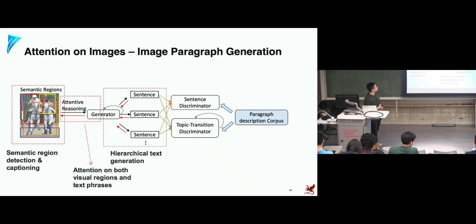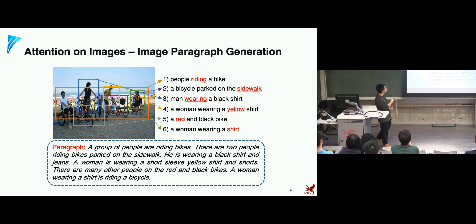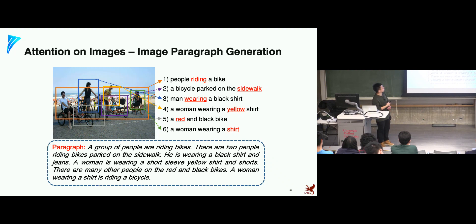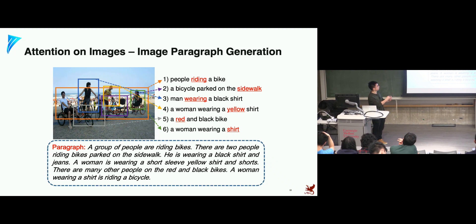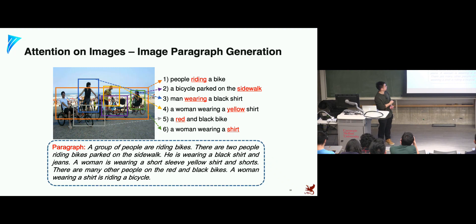For example, given an image, we detect regions: for the big orange box we say 'people riding a bike', for others 'man wearing a black shirt.' We then use attention to aggregate all these regions and phrases into an output paragraph like 'A group of people are riding bikes' and 'He's wearing a black shirt and jeans.' These sentences are informed by the corresponding local phrases. This is an application of attention mechanism in a complex vision-language task.